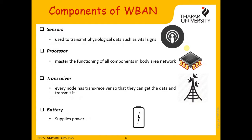The components involved in Wireless Body Area Networks are: sensors that capture the data, a processor that processes the data into information, a transceiver that collects and transmits the data, and a battery that supplies the power.